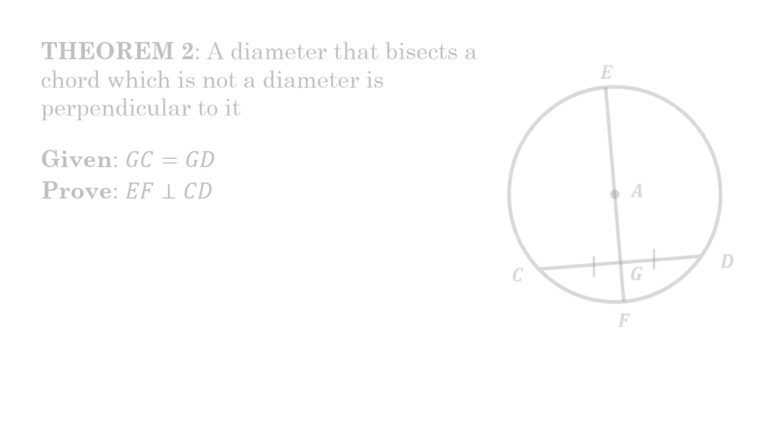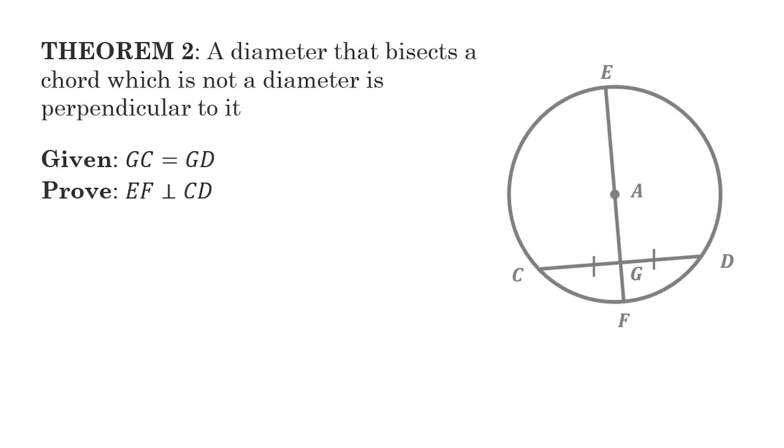Okay, let's show the proof formally. Given that GC is equal to GD. So those are the chords, two parts of the chords. So GC is equal to GD. That is actually bisected. And then we have to prove that EF, this diameter here, is perpendicular to CD.